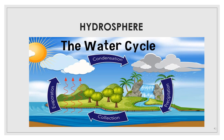Let us understand the concept of the water cycle. During the daytime, when it is very hot, water evaporates from the rivers, lakes, oceans, and any other water bodies, and rises as water vapor into the atmosphere. On cooling, this water vapor changes back into water droplets and falls on the earth in the form of rain. This entire process of water changing from one form to another is known as the water cycle.